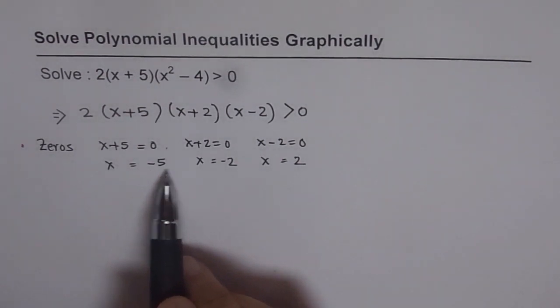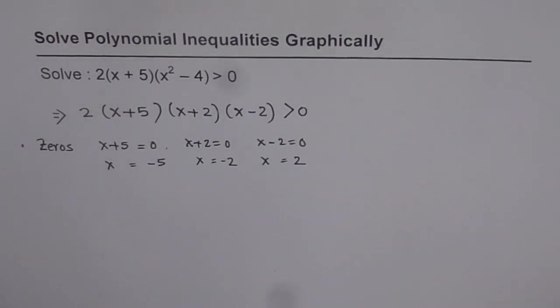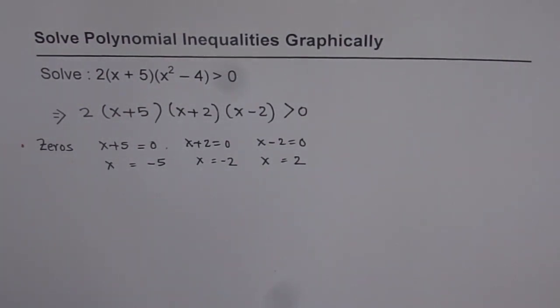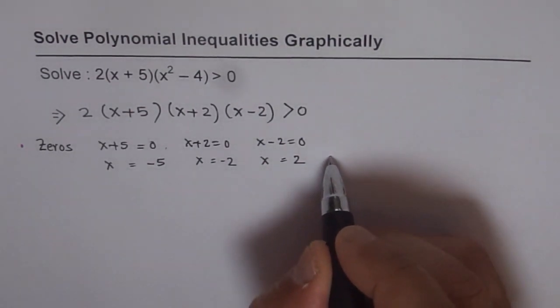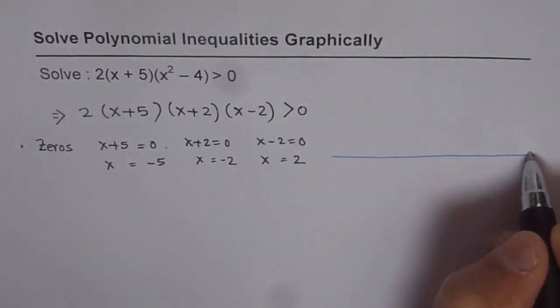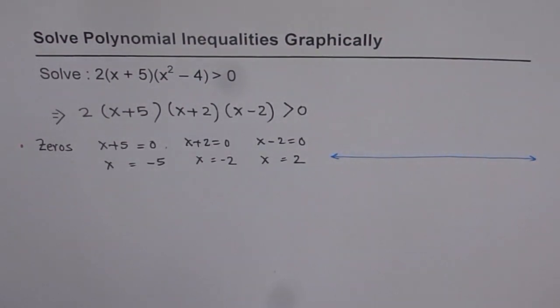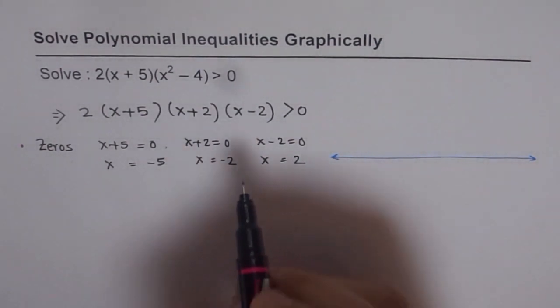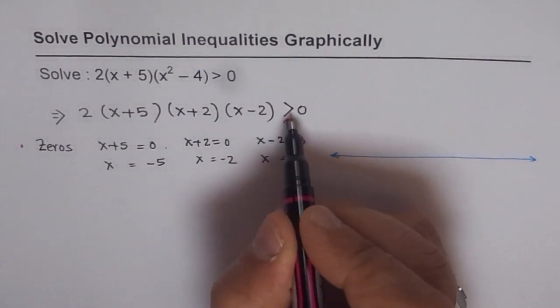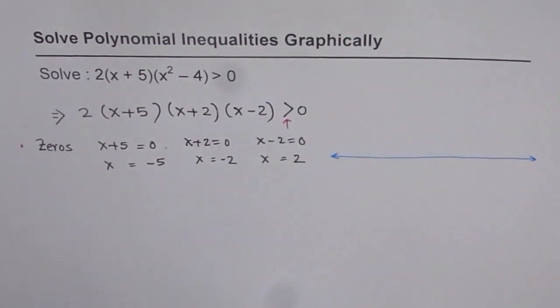So we have got 3 zeros for the given polynomial function. One is at minus 5, the other one minus 2, and the third one is at 2. So what we will do now is sketch a number line. When you sketch a number line, you can mark the zeros on your number line. Number lines extend to both the sides. And the zeros are at minus 5. And note one thing, inequality is only greater than. It does not include the 0.